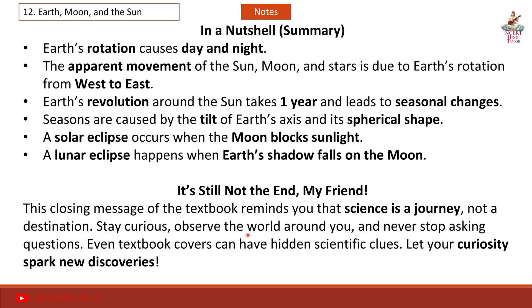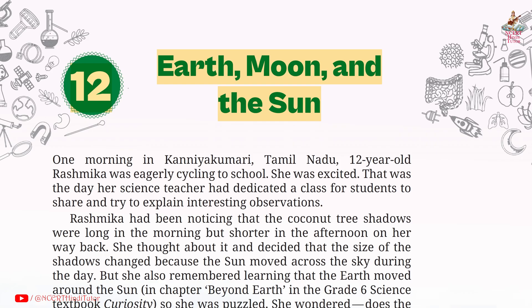Stay curious, observe the world around you and never stop asking questions. Even textbook covers can have hidden scientific clues. Let your curiosity spark new discoveries. We have completed notes and summary from Chapter 12: Earth, Moon and the Sun. With this, we have completed short notes and summary from all the chapters of Grade 7 Science book Curiosity. We will do question answers of this chapter in a separate video. If you like the video, kindly like it, share it with your friends, and subscribe to my channel. Thank you for watching.